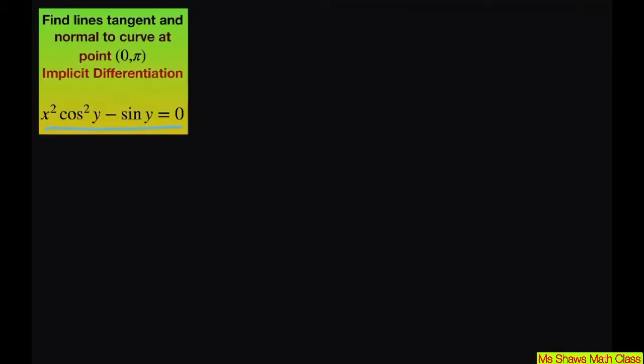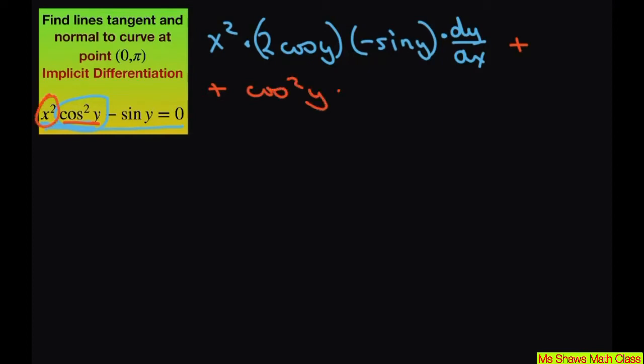So differentiating this, we're going to use the product rule for the first one and the chain rule. So we write down x² and now we differentiate our y. So this is going to be times 2 cos(y) times the derivative of cosine. So that's going to be -sin(y). And since we differentiated the y, this is times dy/dx. Now plus, let me put the plus here, copy down your cos²(y) times the derivative of x², which is 2x.